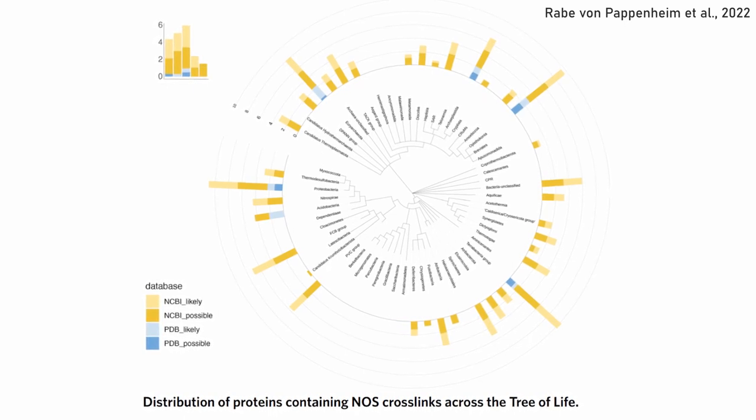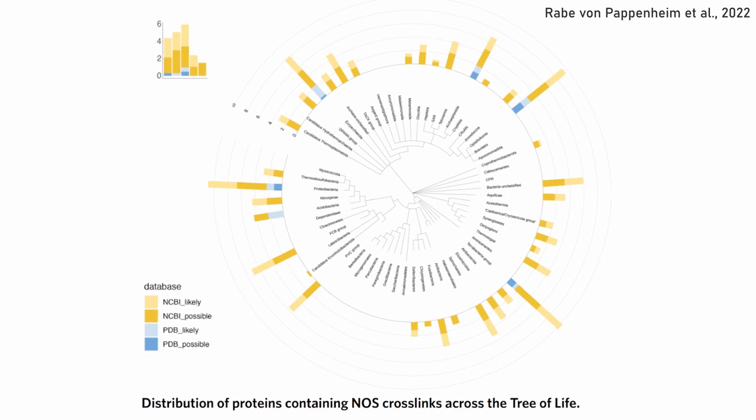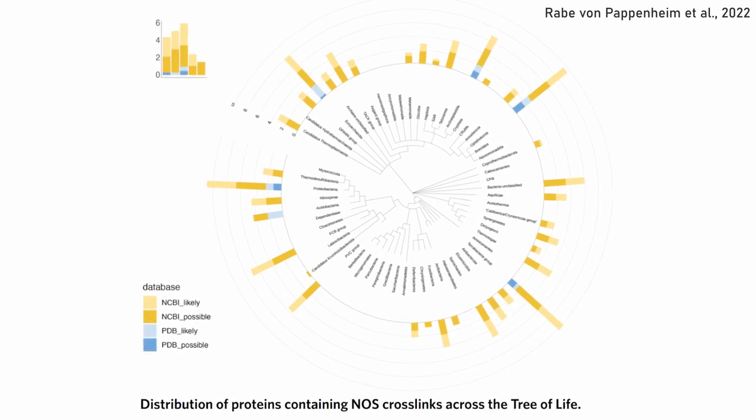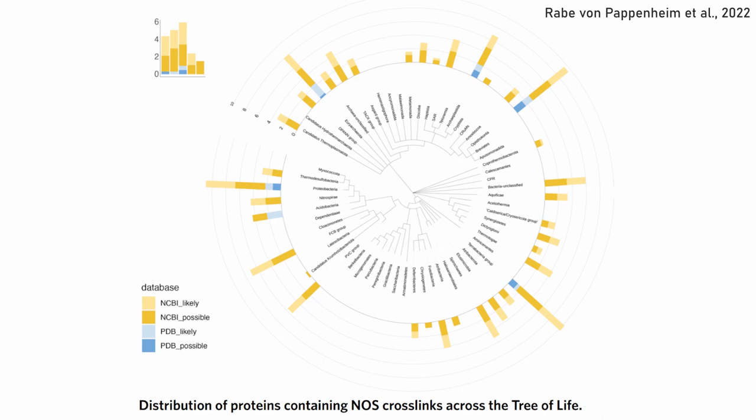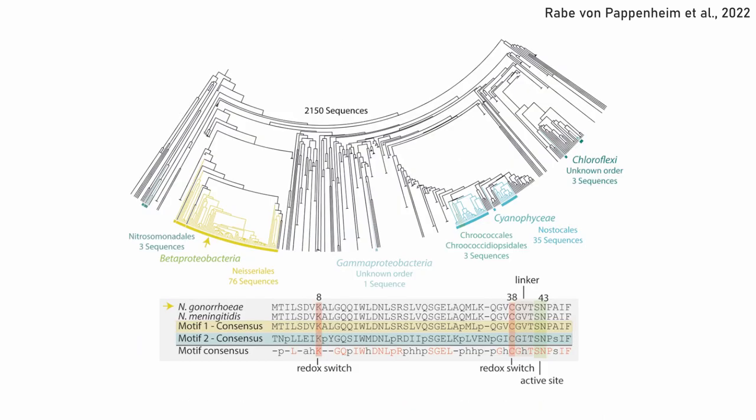Also, the well-known redox-dependent activation of some genes fits nicely to the appearance of NOS bridges in DNA binding proteins. Last but not least, the lysine-cysteine pairs are highly conserved in different orthologs, suggesting a functional role of the motif.